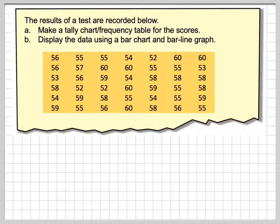The results of a test are recorded below. Make a tally chart or frequency table for the scores and display the data using a bar chart and a bar line chart. So here we've got data. This is what's known as raw data.